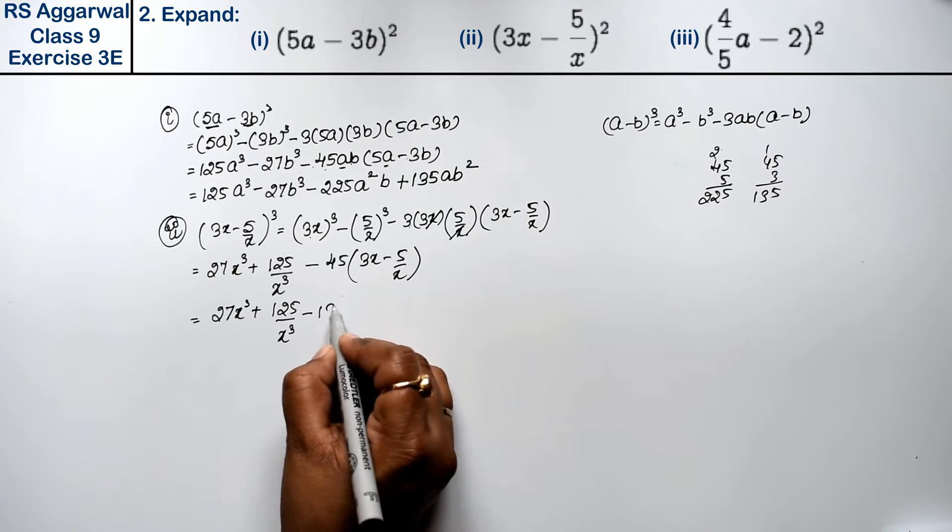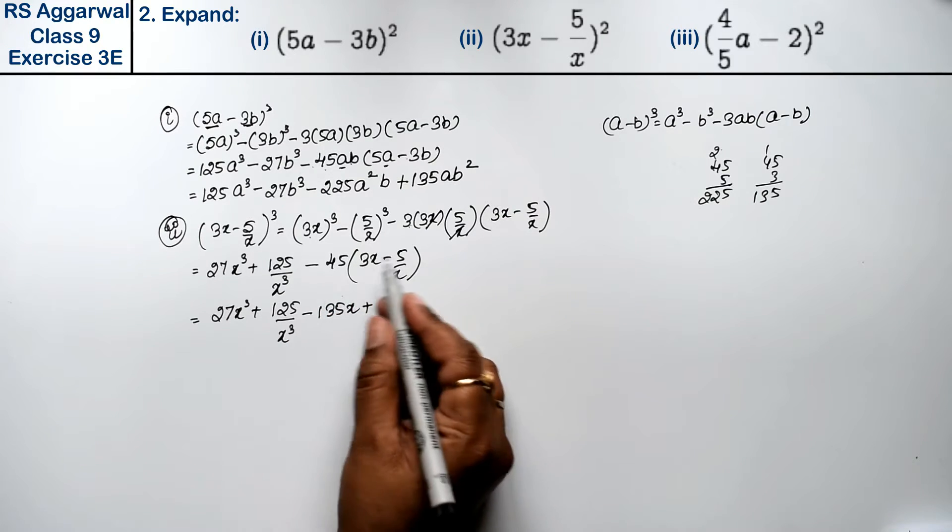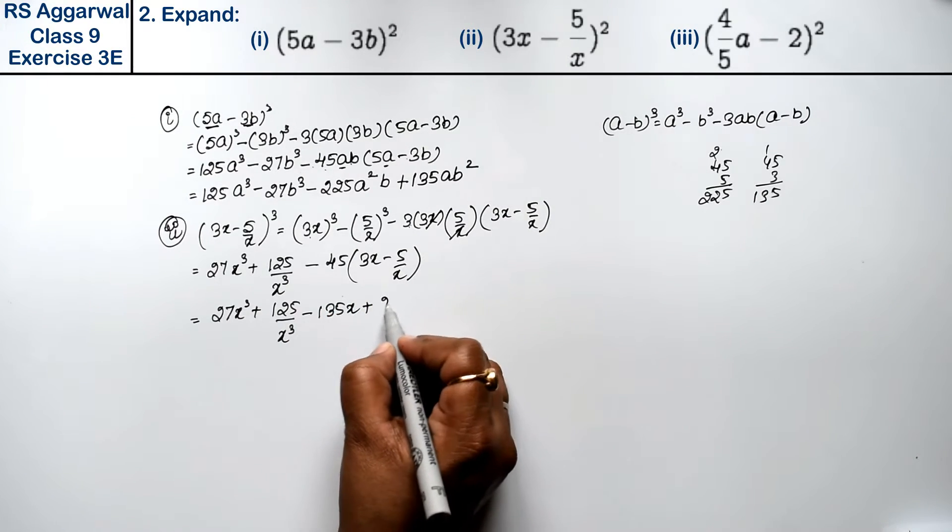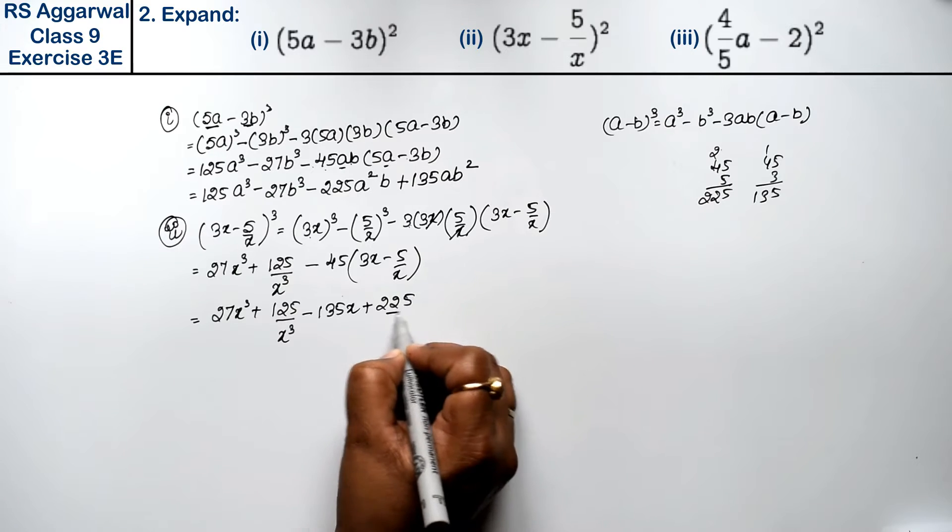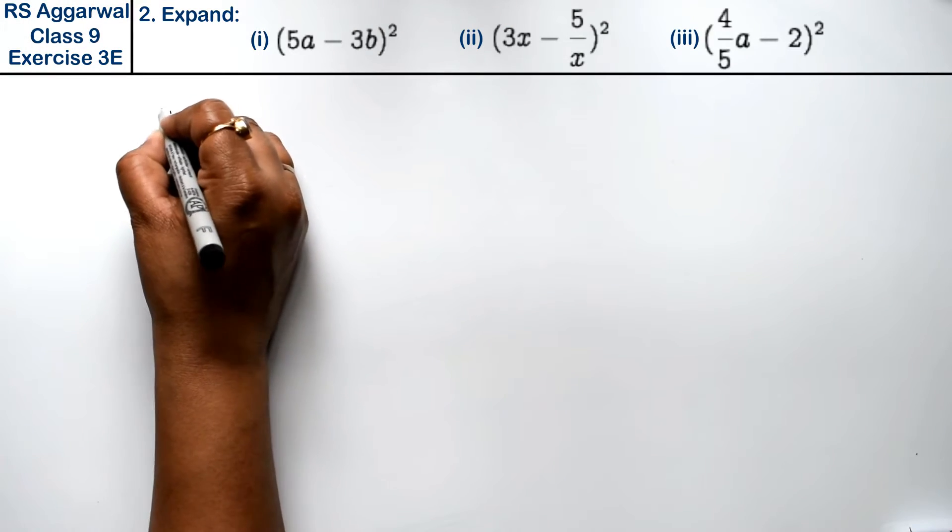27x³ minus minus plus 45×3's is 135x minus minus plus 45×5's is 225/x is the answer. Let's do third part.